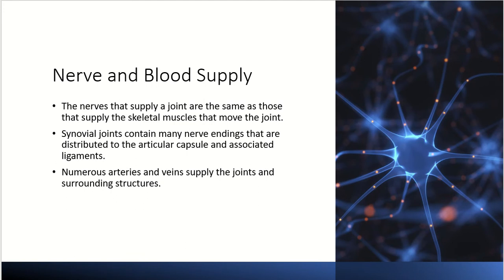The nerves that supply a joint are the same nerves that supply the skeletal muscles responsible for moving that joint. Synovial joints contain many nerve endings distributed across the articular capsule and associated ligaments — this is why dislocating or subluxing a joint is painful. Various arteries and veins supply the joints and surrounding structures to deliver nutrients and oxygen and remove CO2 and metabolic waste from the cells in the joint.